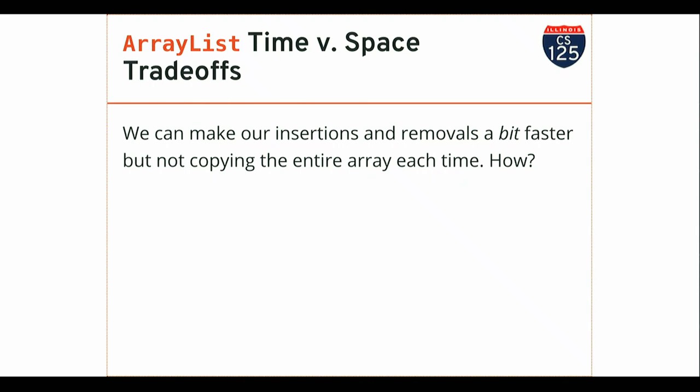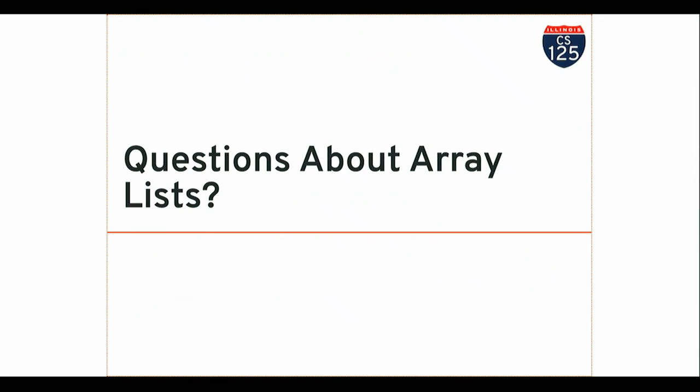ArrayList performance summary: get and set are constant time — O(1) — awesome, life is good. Add and remove are O(N), so these scale with the size of the list. We're extremely happy about the performance of get and set, but concerned about the performance of add and remove. There are some optimizations you can perform internally if you want to avoid having to copy the array every single time — ask on the forum. Any questions about this before we introduce our next list implementation? Java has a built-in list interface; the one we are using is our own because it's simpler.